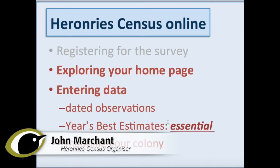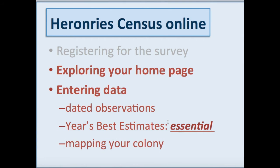This presentation assumes that you already have your BTO login for online surveys and have registered for Heronbury Census. We're looking at exploring your home page that you see when you log in to the Heronbury Census, and we're looking at the three elements of entering your data: dated observations, the year's best estimates — which are the only essential part of the process — and mapping your colony.